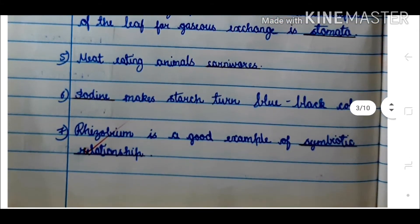5. Meat-eating animals are carnivores. 6. Iodine makes starch turn blue-black in color. 7. Rhizobium is a good example of a symbiotic relationship.